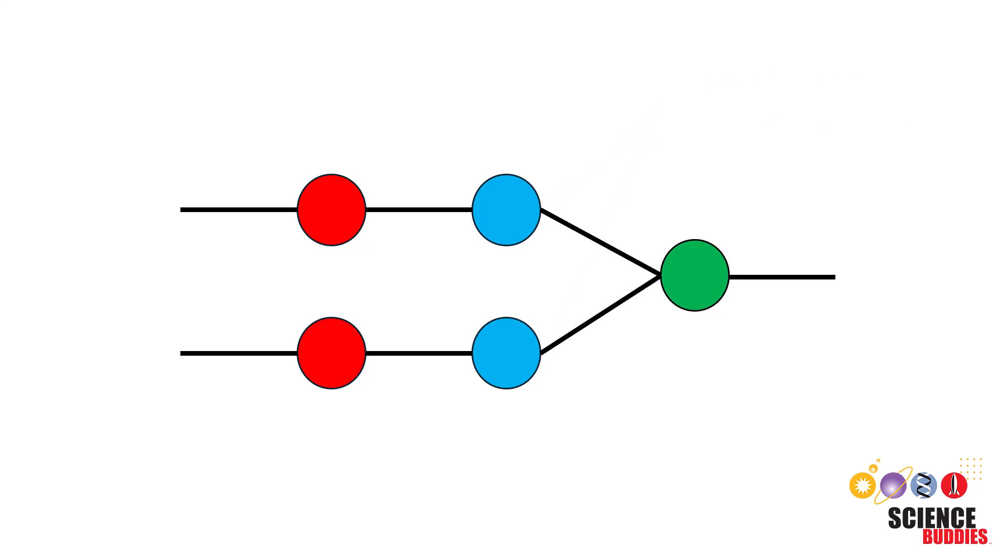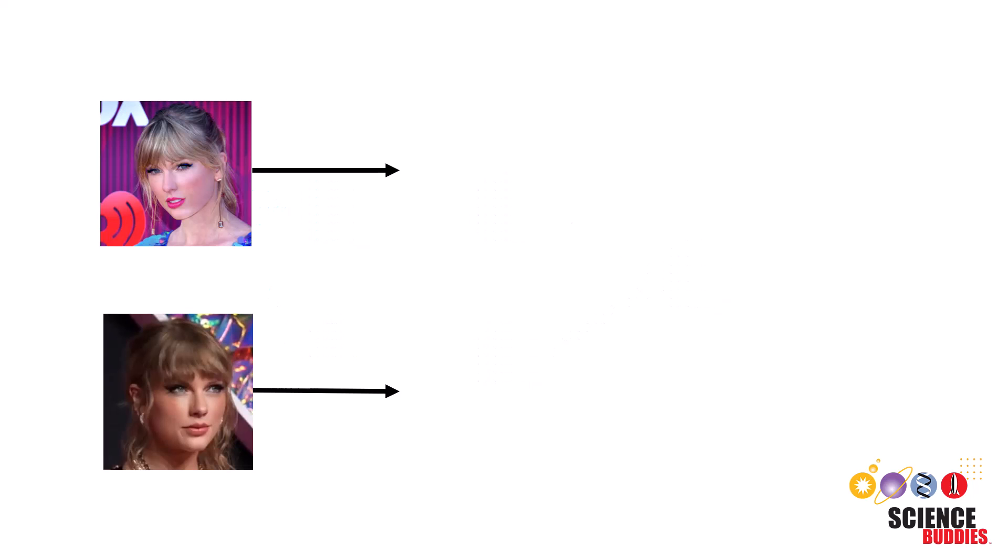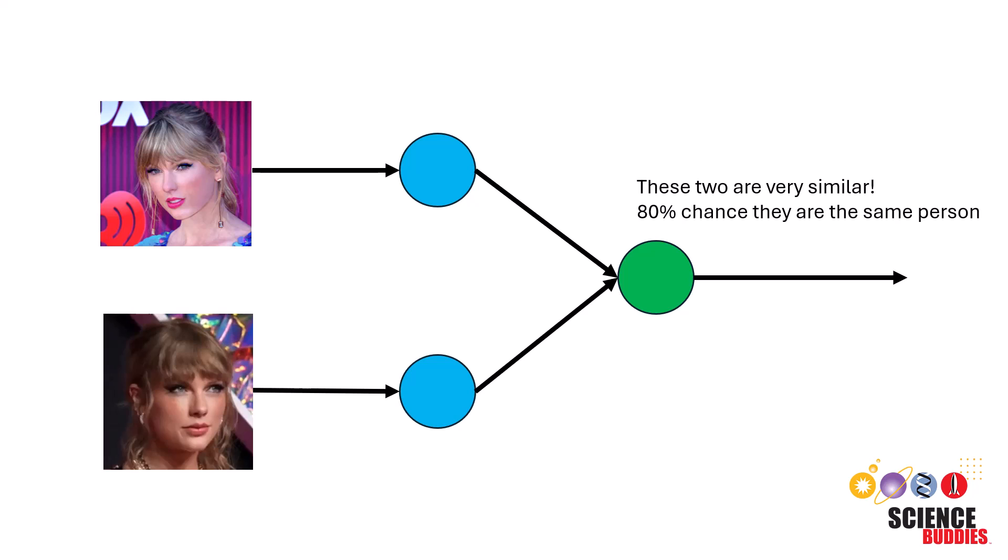A Siamese neural network typically consists of twin branches, each processing one input. By feeding two inputs through two identical pathways, this network learns to extract meaningful features and compute a similarity metric.